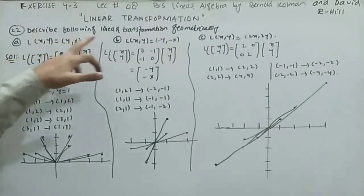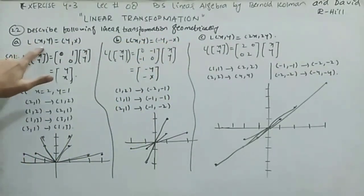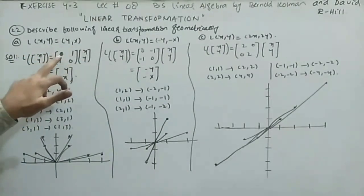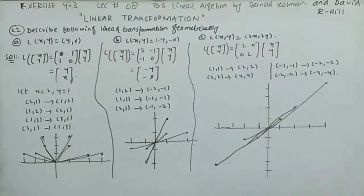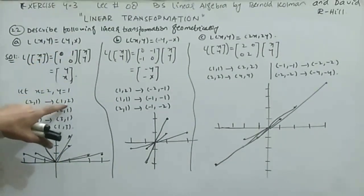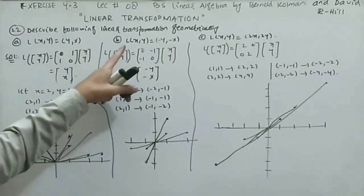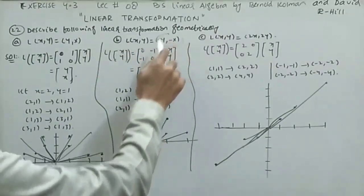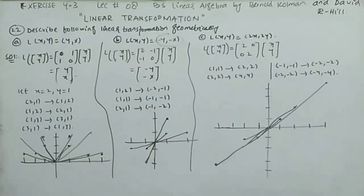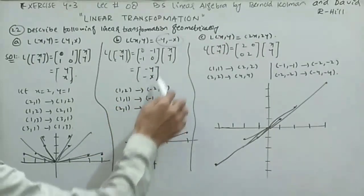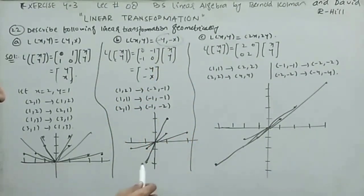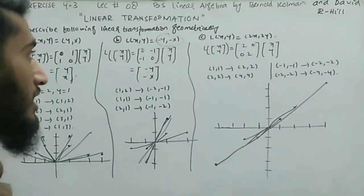Question 22 continues geometric descriptions. Part (a): L(x,y) = (y, x). The matrix A = [0,1; 1,0]. Testing points (2,1)→(1,2), (1,2)→(2,1), (1,3)→(3,1): drawing these in the plane shows the transformation is a reflection about the line y = x. Part (b): L(x,y) = (-y,-x) with matrix A = [0,-1;-1,0]. Testing points gives output (-y,-x); drawing the graph shows it passes through the origin, reflected about both axes.